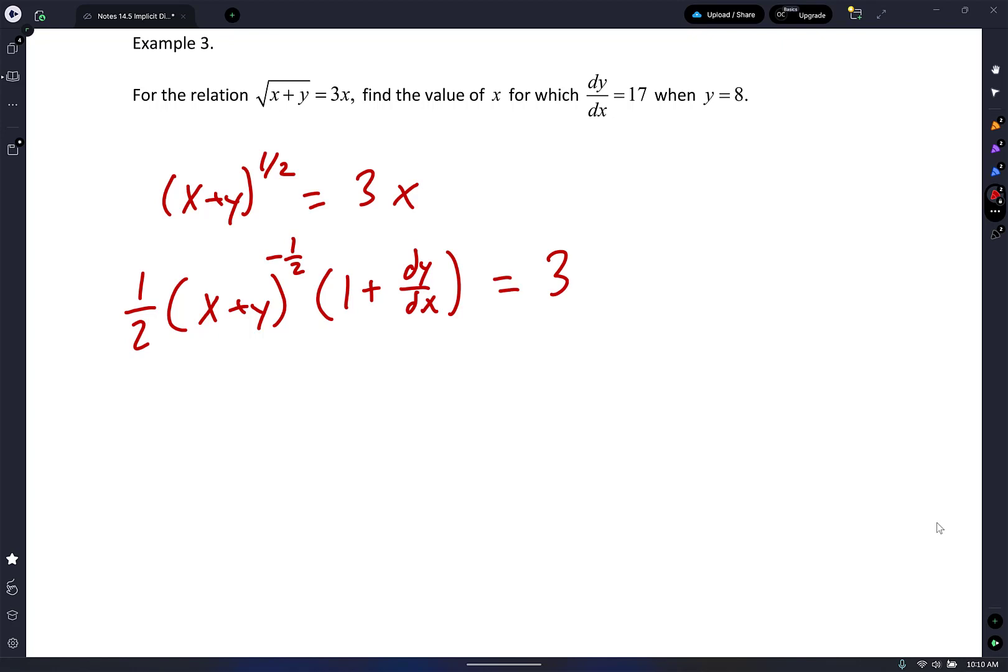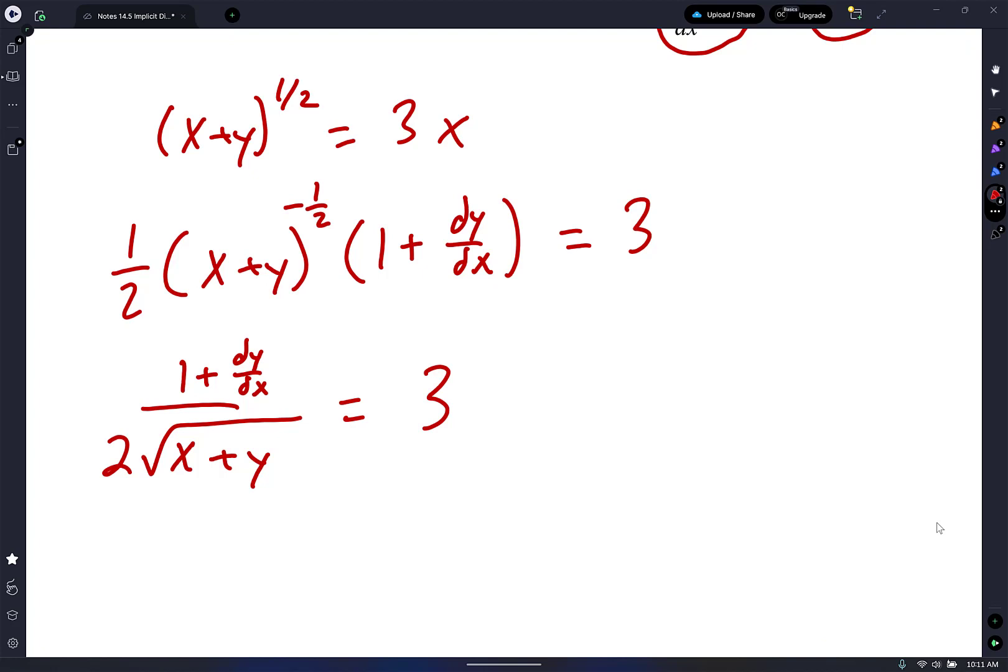Can we do that? I think the easiest thing to do is to substitute what dy/dx is and what y is and solve for x from that. Does that make sense to you guys? I'm going to rewrite it: (1/2) over square root (x + y) times (1 plus dy/dx) and all that equals 3. I haven't done anything crazy.